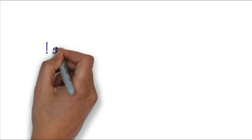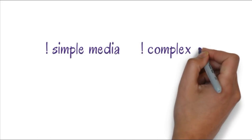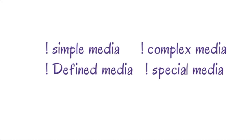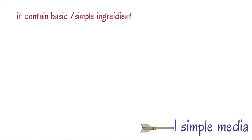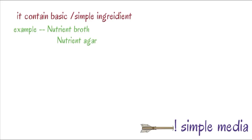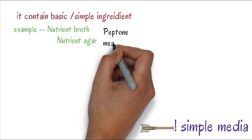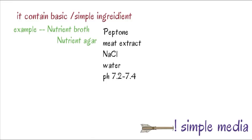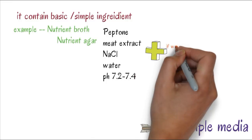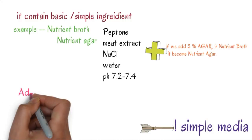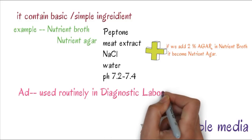Based on ingredient, we have simple media, complex media, defined media, and special media. Simple media contains basic or simple ingredients. In case of nutrient broth and nutrient agar, the composition is peptone, meat extract, NaCl, water, and pH 7.2 to 7.4. If you add 2% agar, it becomes nutrient agar. It's used routinely in diagnostic laboratories and to maintain stock cultures.